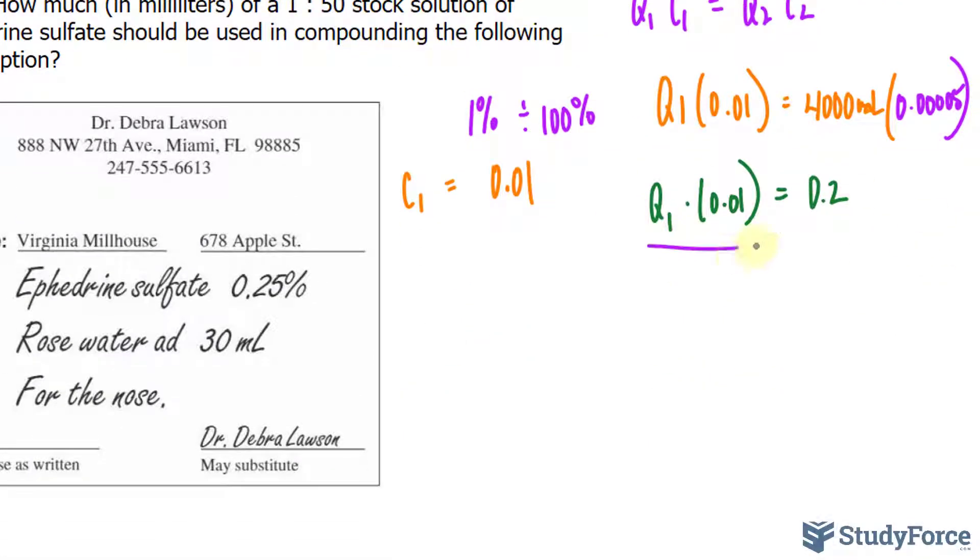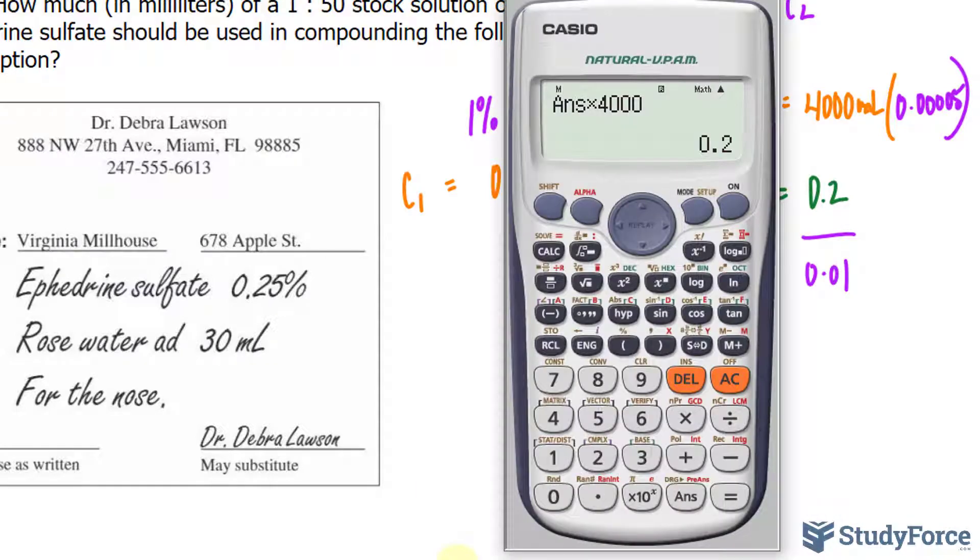And the left side of the equation is Q1 times 0.01, and then you divide both sides by 0.01. This and that will cancel out, leaving you only with Q sub 1 on the left side, and on the right side 0.2 divided by 0.01 makes 20.